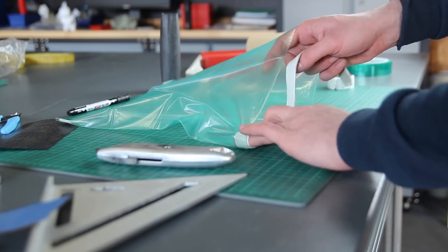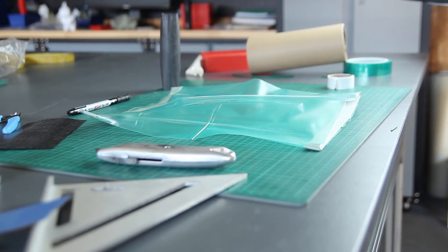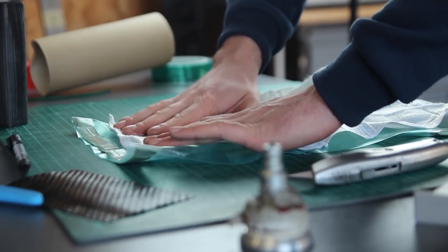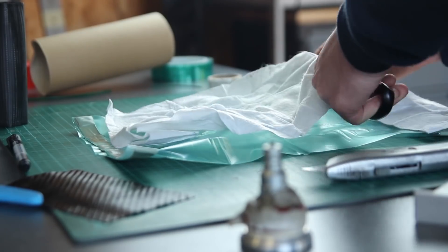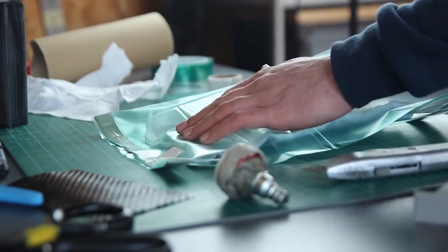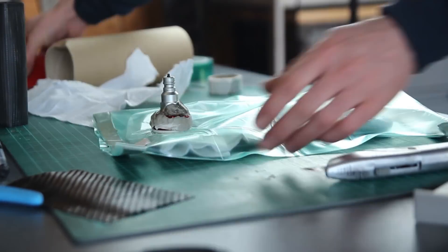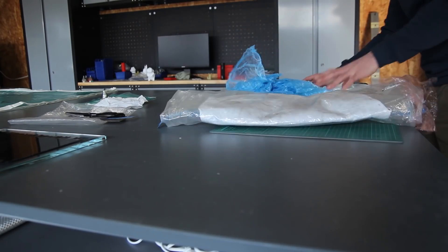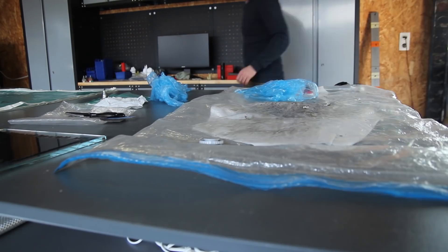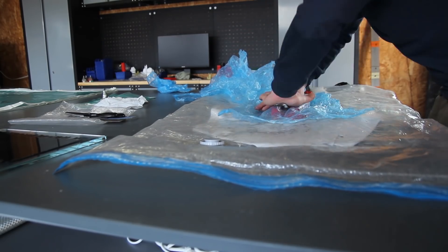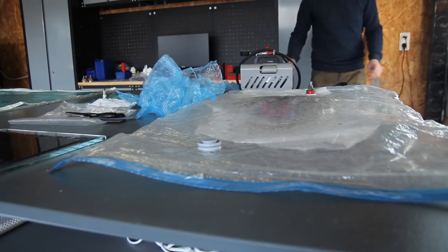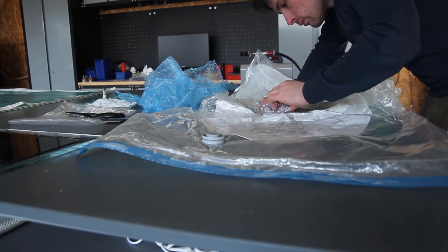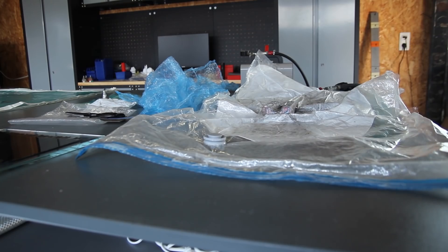I have some more videos about prepreg on my channel, so I'll go through it quickly. Prepreg is pre-impregnated carbon fiber that already has the resin in it. It won't cure at room temperature, so you'll need an oven and you'll need to cure it at 120 degrees. That's why for me it's important to know if PLA molds will hold these temperatures.